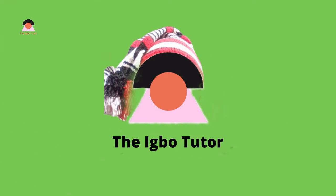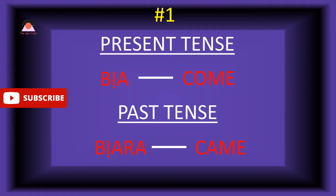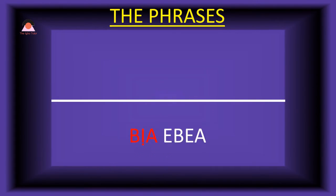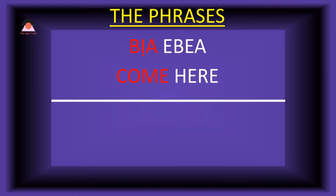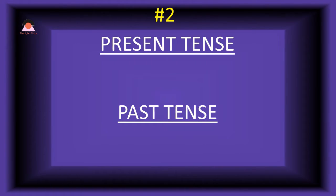I am the Igbo tutor, Onyen Kuzibu. Our first word is 'beya' which means 'come.' And the past tense of beya is 'beara,' meaning 'came.' Its use in a phrase: present tense — 'beya' which means 'come here.' Past tense — 'o beara' meaning 'he or she came here.' Of course, 'o' goes for both sexes.